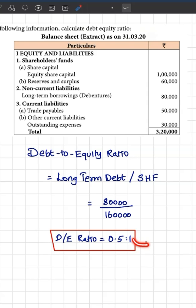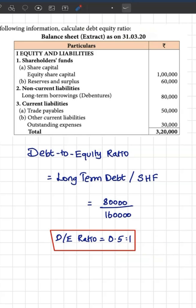What does that mean? For every 1 rupee of owner's funds in the business, this business has borrowings of 50 paise. This ratio looks very healthy because the borrowings are lesser than what the owners have contributed.